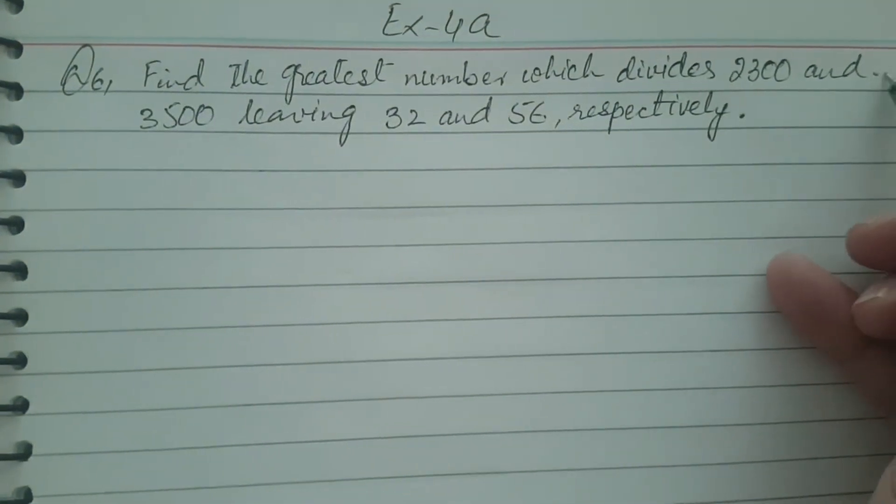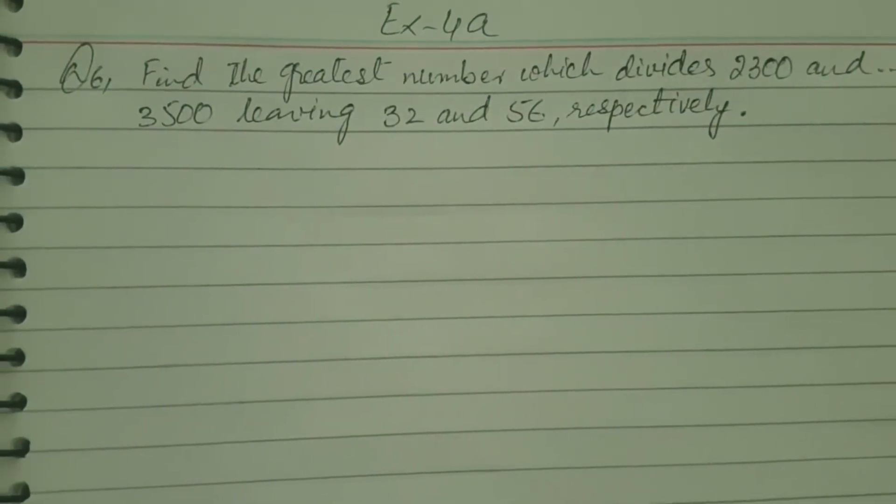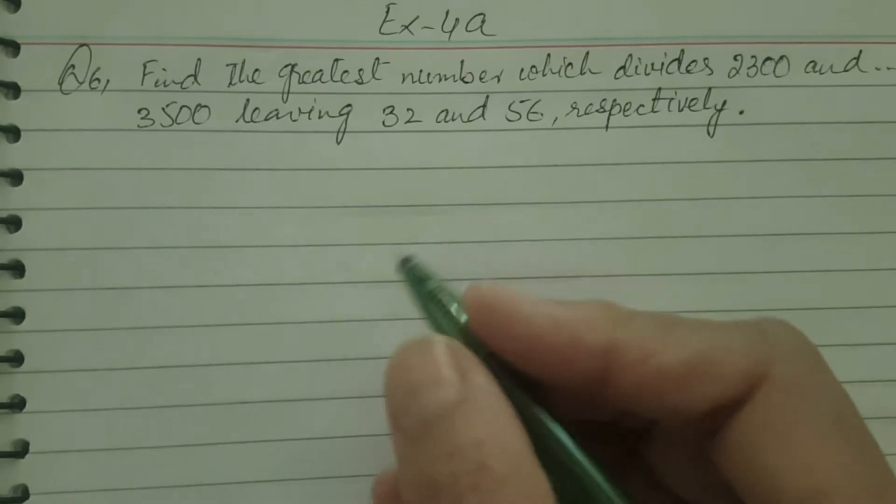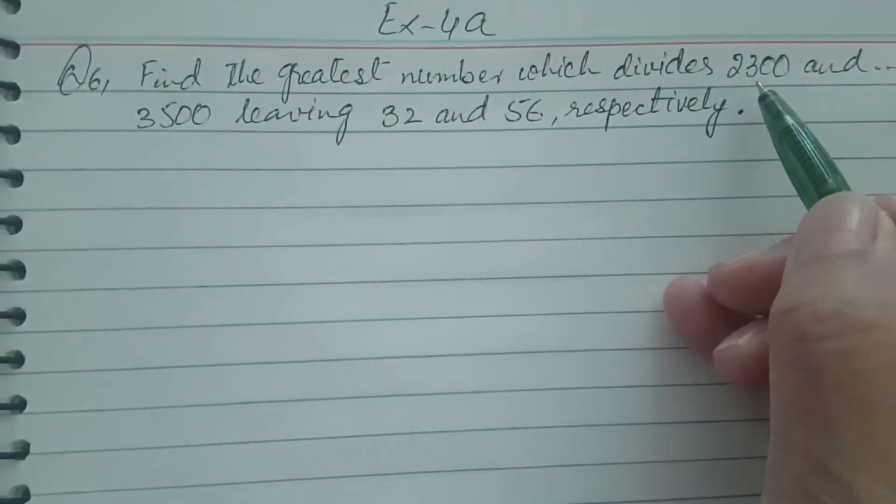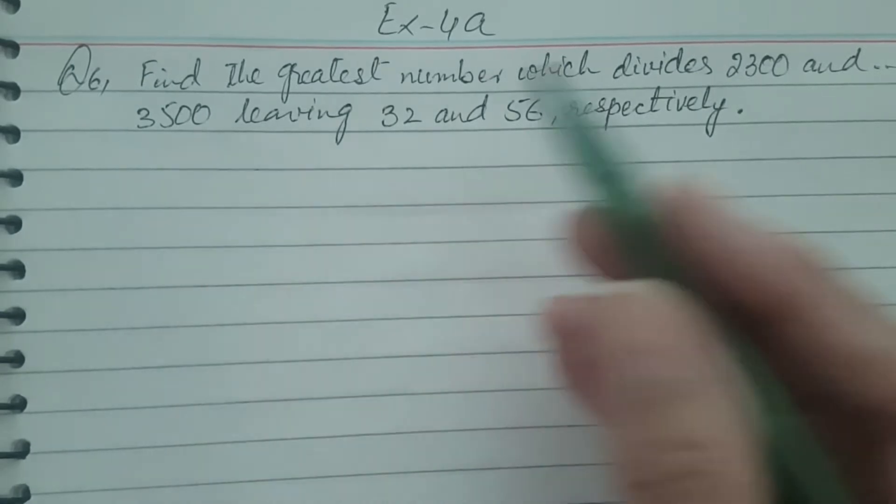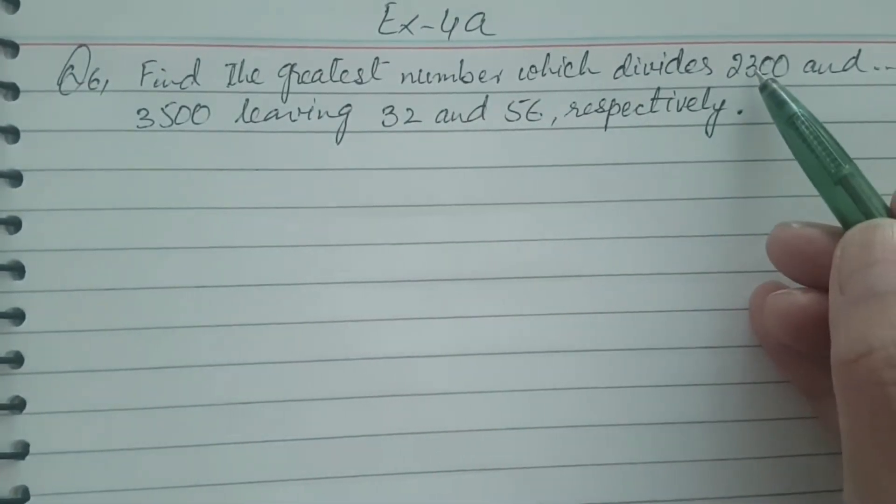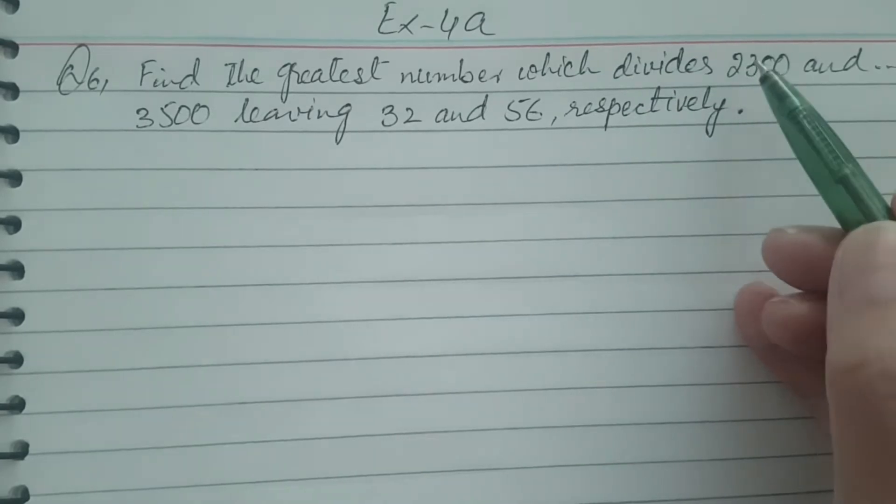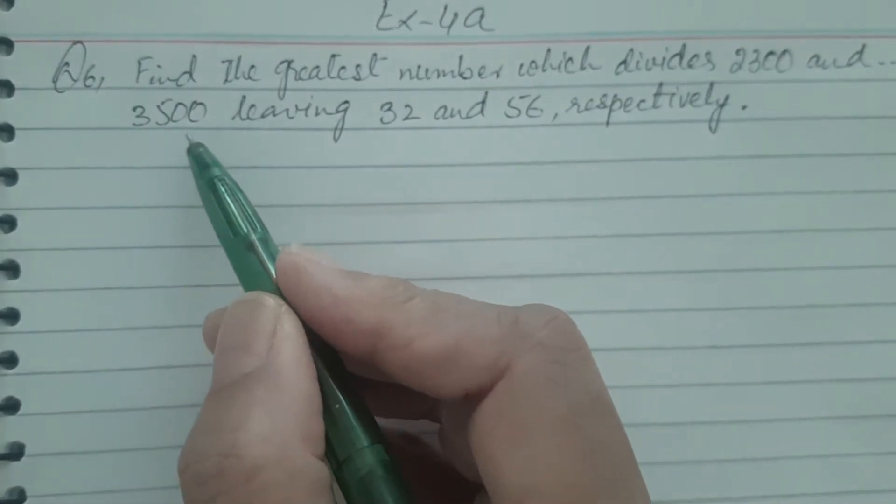You should write down the whole statement from the book. Let's start doing the question. First you must know that 2300 and 3500 are not exact divisors of each other. Their remainders are 32 and 56 respectively. In HCF we shouldn't have any remainder.